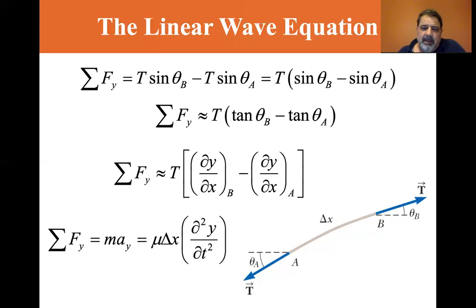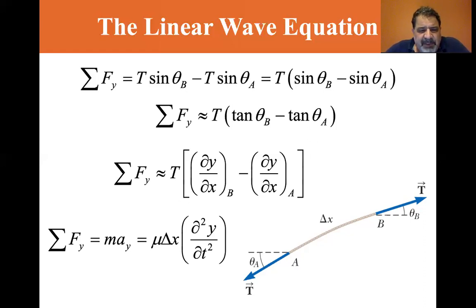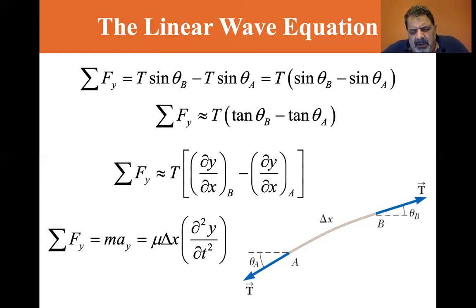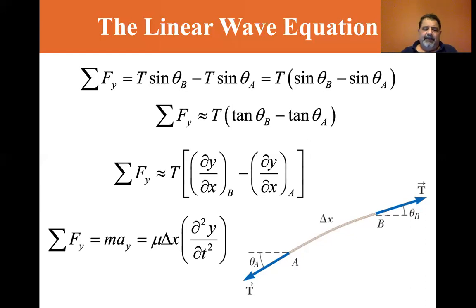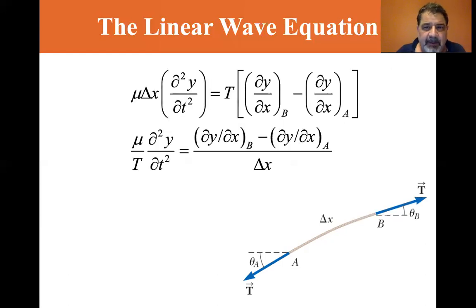The sum of the forces equals mass times acceleration, which is the second derivative of position. Mass equals μΔx, where μ is the mass density per unit length. So we have μΔx times the second partial derivative of y with respect to t.